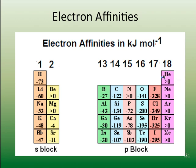Some elements show an electron affinity greater than zero — that's a positive energy change, meaning the process is endothermic and it takes energy to make those atoms accept an electron. Nitrogen has a positive electron affinity, as do beryllium and magnesium. Chlorine has an electron affinity of −349 kJ/mol and fluorine −329 kJ/mol. You can also form negative ions of the alkali metals, though the energy change is not as large. The larger the exothermic value, the lower the energy state and typically the more stable that ion is.